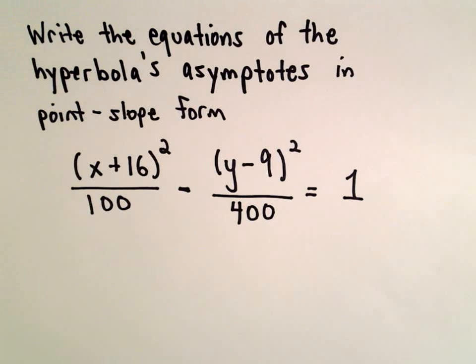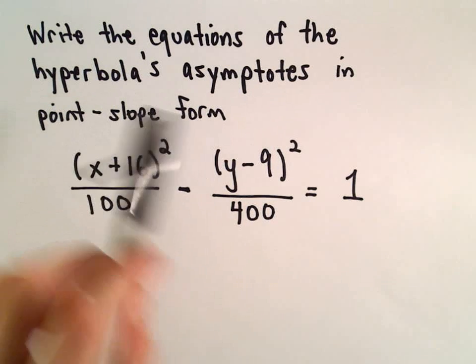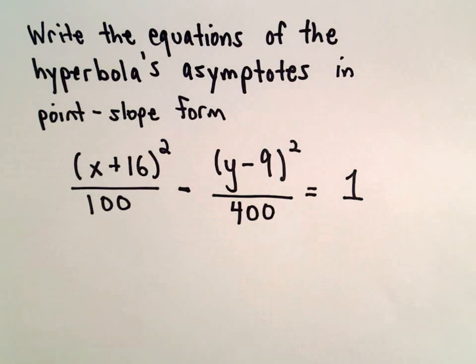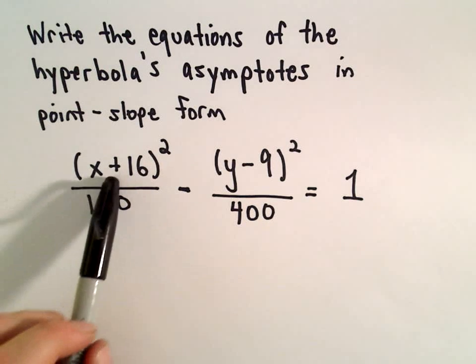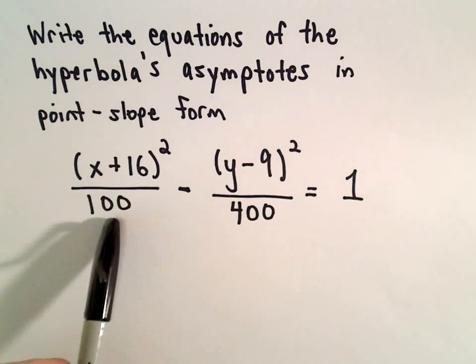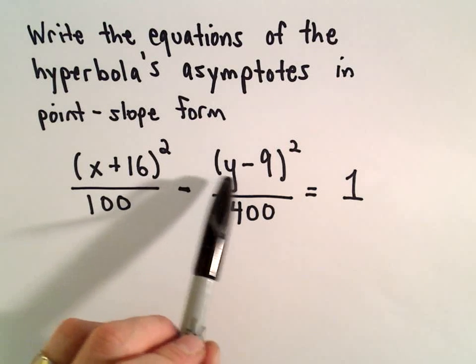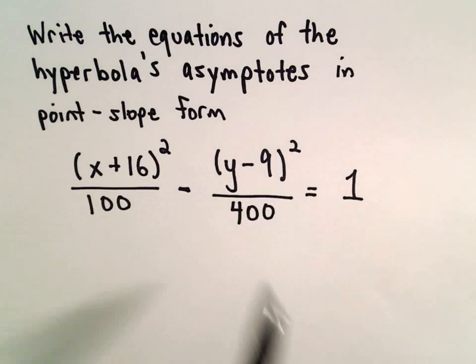Here we're going to find the equations for the hyperbola's asymptotes in point-slope form. We have the hyperbola x plus 16 quantity squared over 100 minus the quantity y minus 9 squared over 400 equals 1.